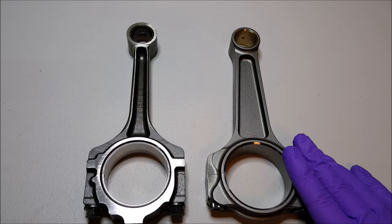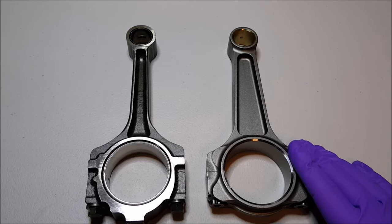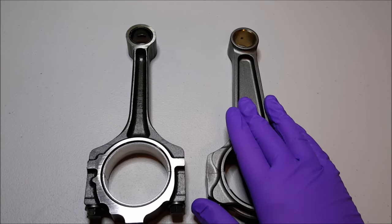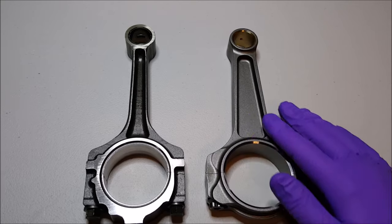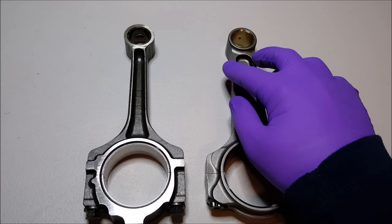So this rod, the new rod is actually a 4340 billet I-beam rod. So that means that they start with a chunk of forged material, it's like a brick, let's say, and they mill it out and they create this shape in the form of an I-beam, this cross-section here.